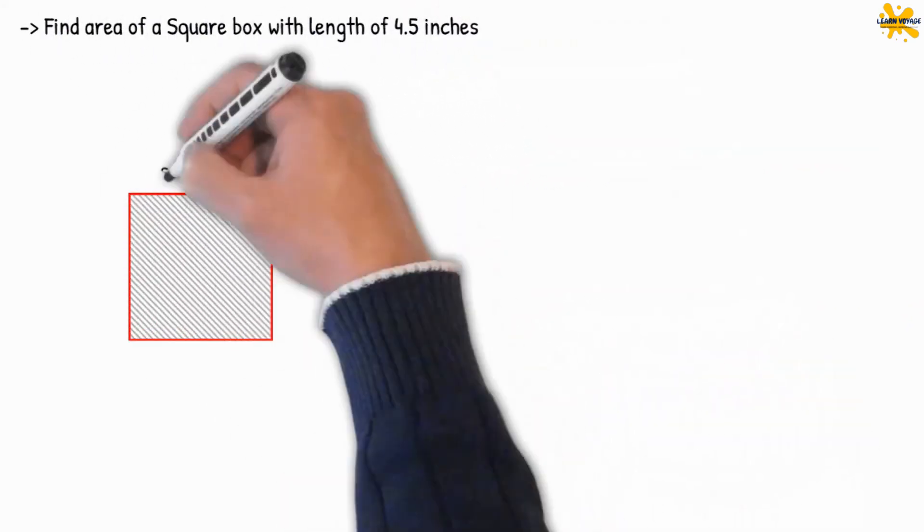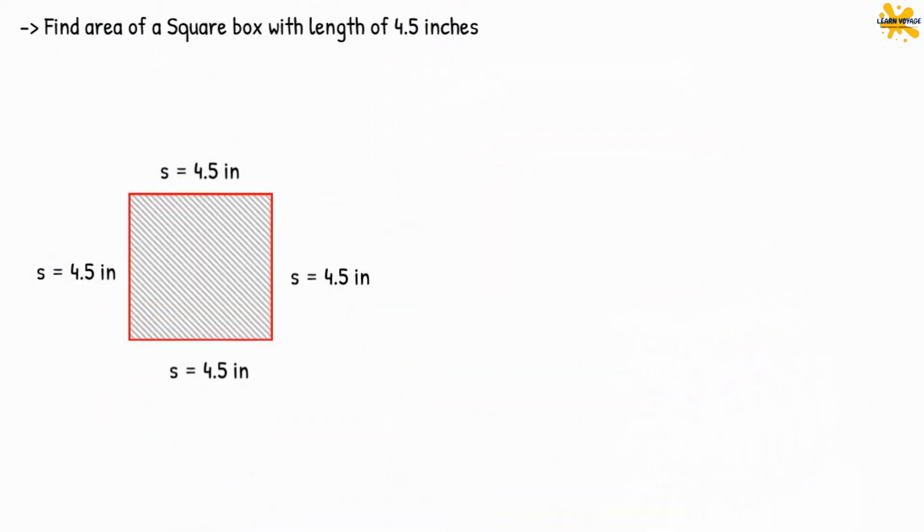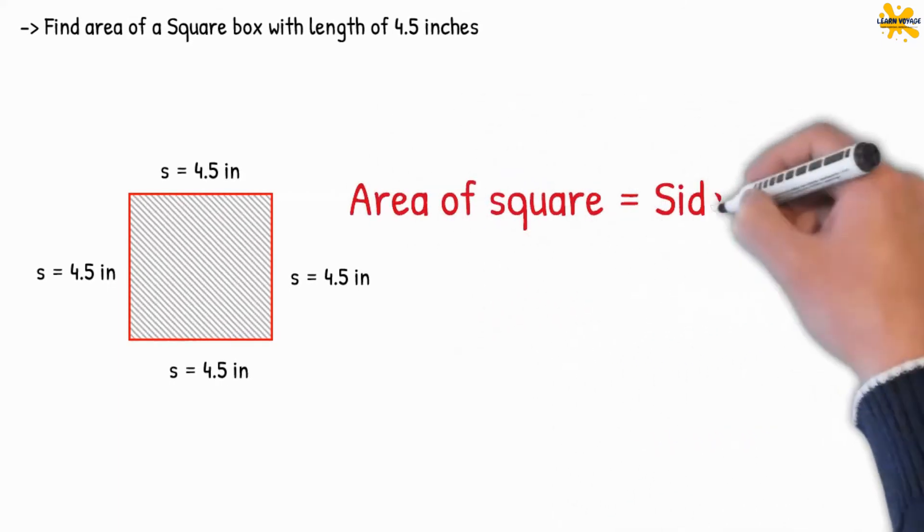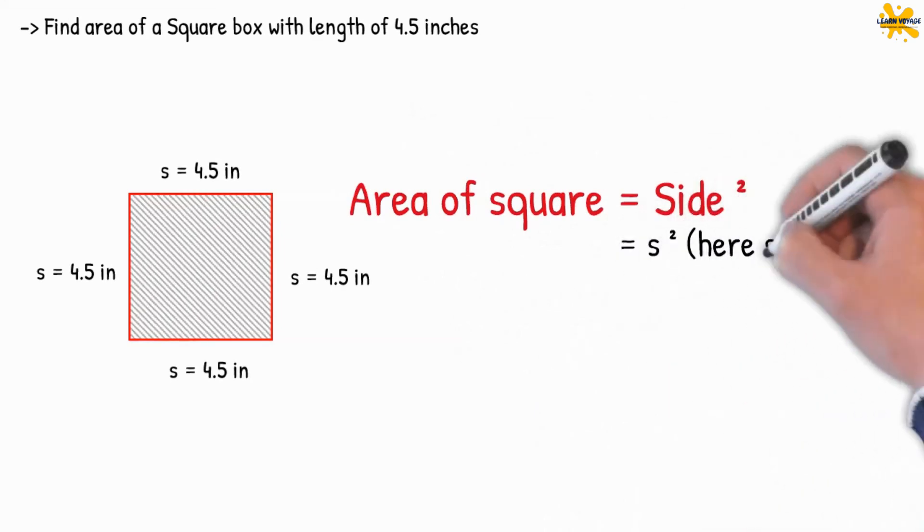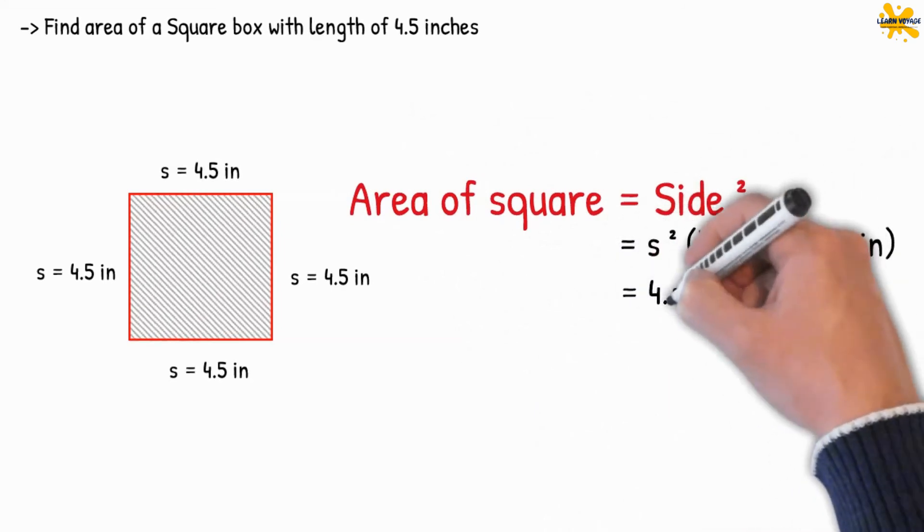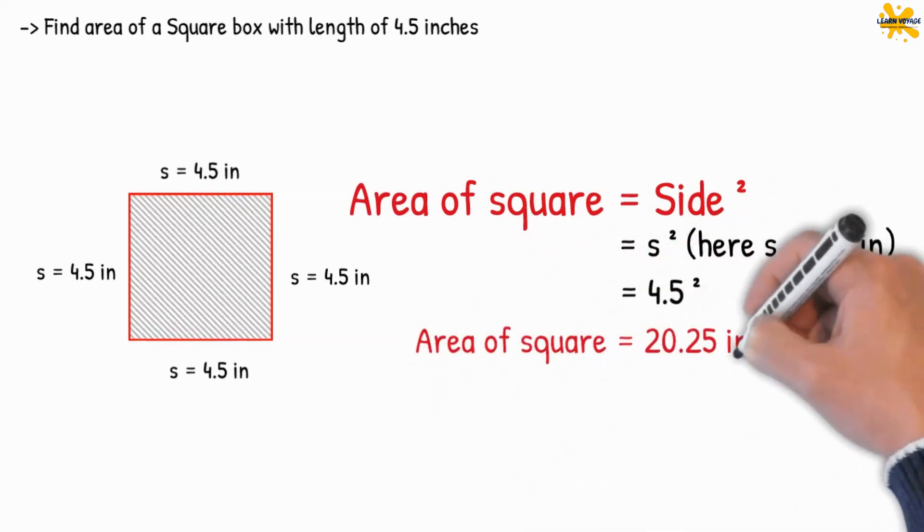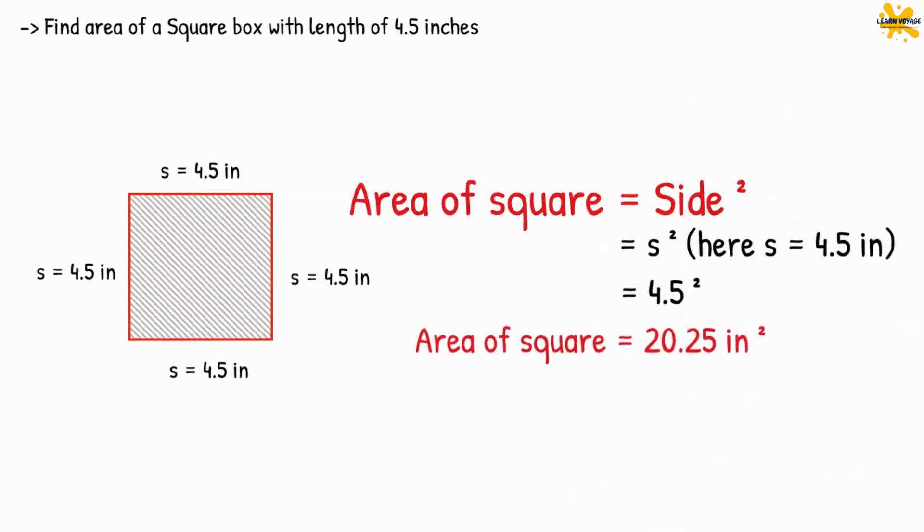Now find the area of a square box with a length of 4.5 inches. Do you need help? Area A will be equal to 4.5 to the power of 2. You should get 20.25 square inches. Excellent work if you've got the value correct. And if your answer was incorrect, replay the video and try again.